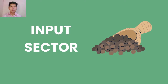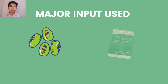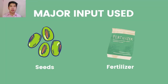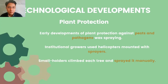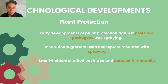Let us now proceed to the input sector. The major inputs used are seeds of Hevea brasiliensis and fertilizers. For plant protection, early development against pests and pathogens involves spraying. Institutional growers would equip helicopters with sprayers, while smallholders climbed and sprayed each tree manually.